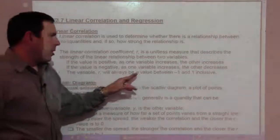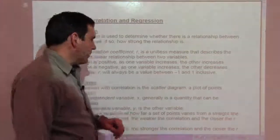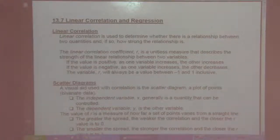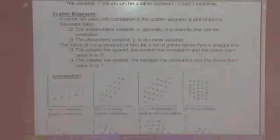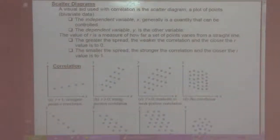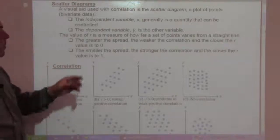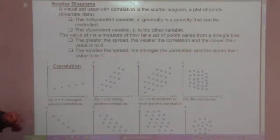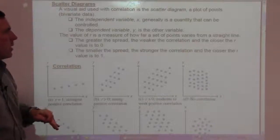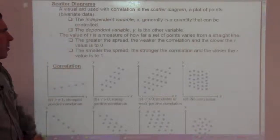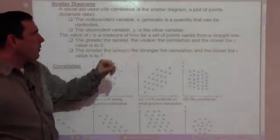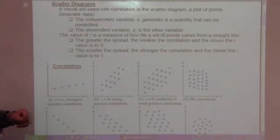The variable R will always be a value between negative one and one inclusive. Scatter diagrams are a visual aid used with correlation — a plot of points using two-variable data. The independent variable X is generally a quantity that can be controlled, and the dependent variable Y is the other variable. The value of R is a measure of how far a set of points varies from a straight line.